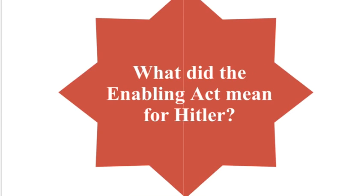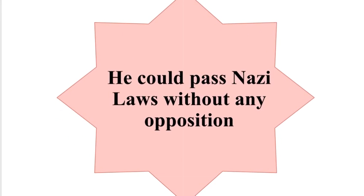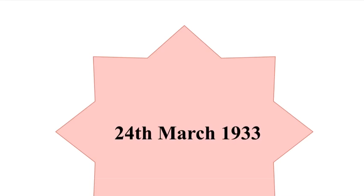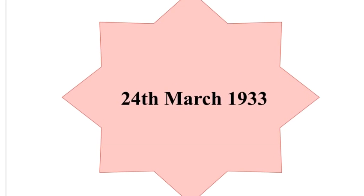What did the Enabling Act mean for Hitler? He could pass Nazi laws without any opposition. When was the Enabling Act passed? The 24th of March 1933.